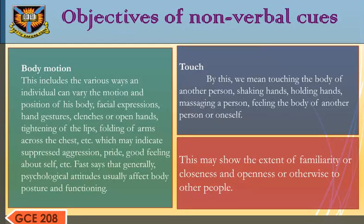Body motion includes the various ways an individual can vary the motion and position of his body — facial expressions, hand gestures, clenched or open hands, tightening of the lips, folding of arms across the chest, which indicates suppressed aggression or pride. Fast says that generally, psychological attitudes usually affect body posture and functioning.